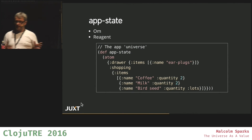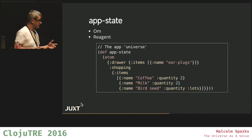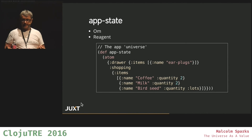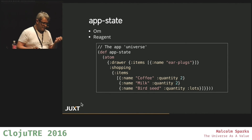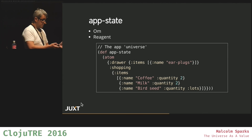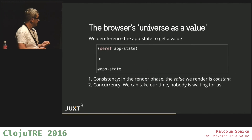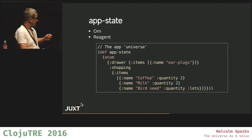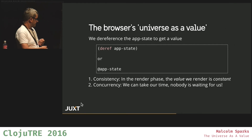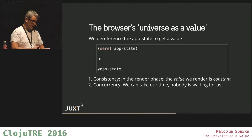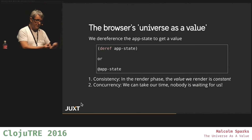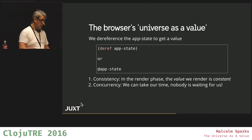We've seen all these ideas before. In ClojureScript, Om, and React, we have a thing called an app state. And an app state is stored in an atom — it's our universe. And we can deref it. We take some universe, we deref it, and we get two qualities. We get consistency: when we render this value to a virtual DOM, this value is constant, it doesn't change — so it's consistent. That's a really nice property.